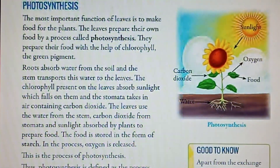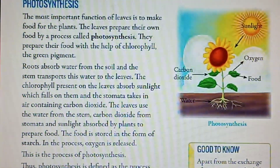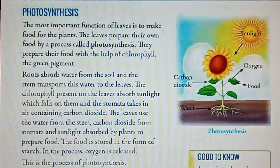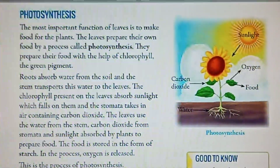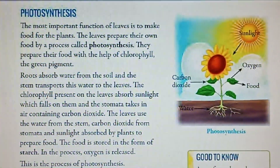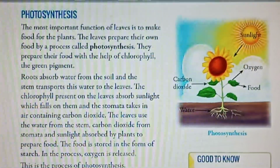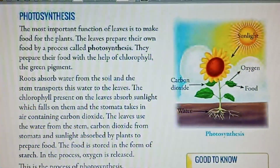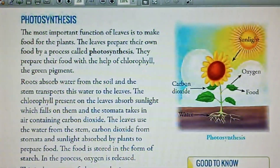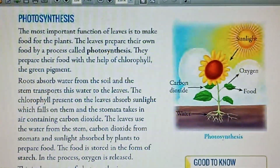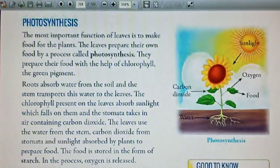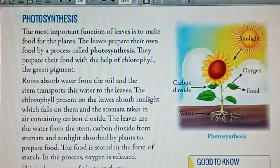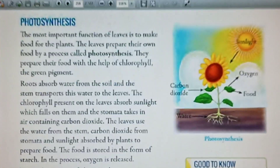Photosynthesis is a process by which green plants make their food by using carbon dioxide and water in the presence of sunlight and chlorophyll. It is the most important function of leaves.